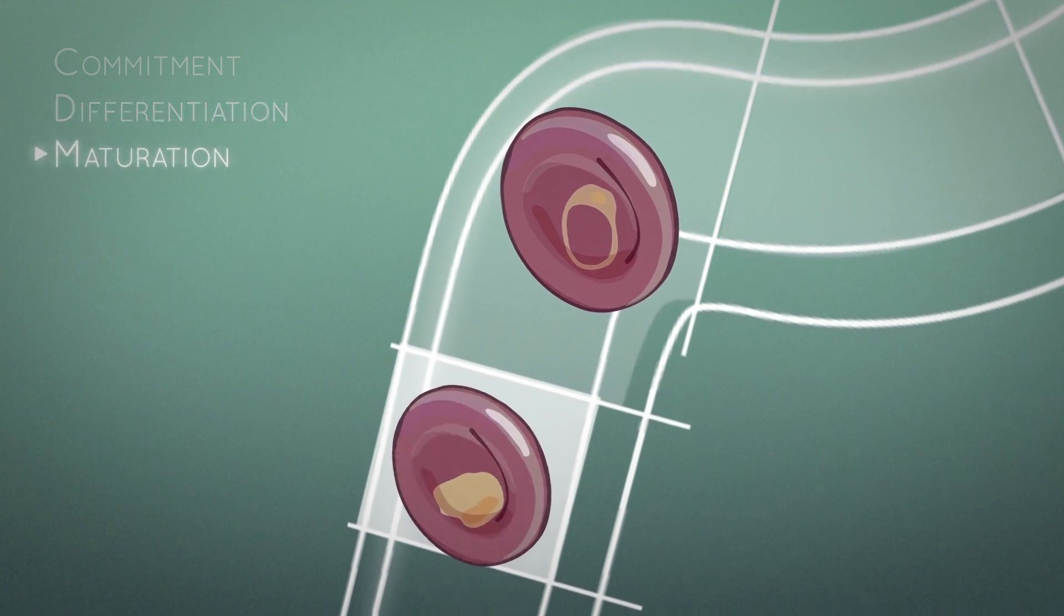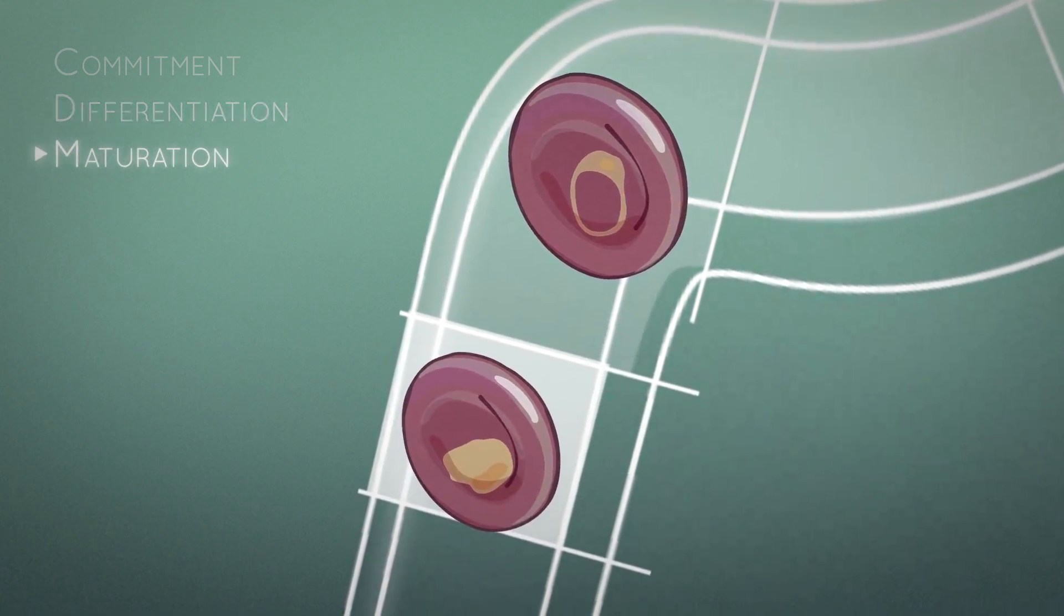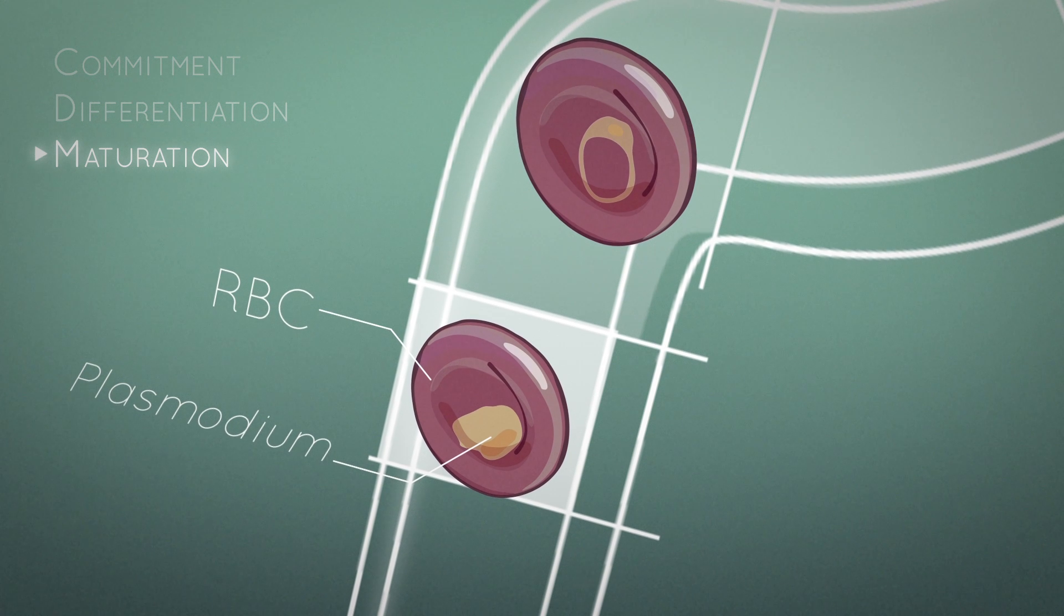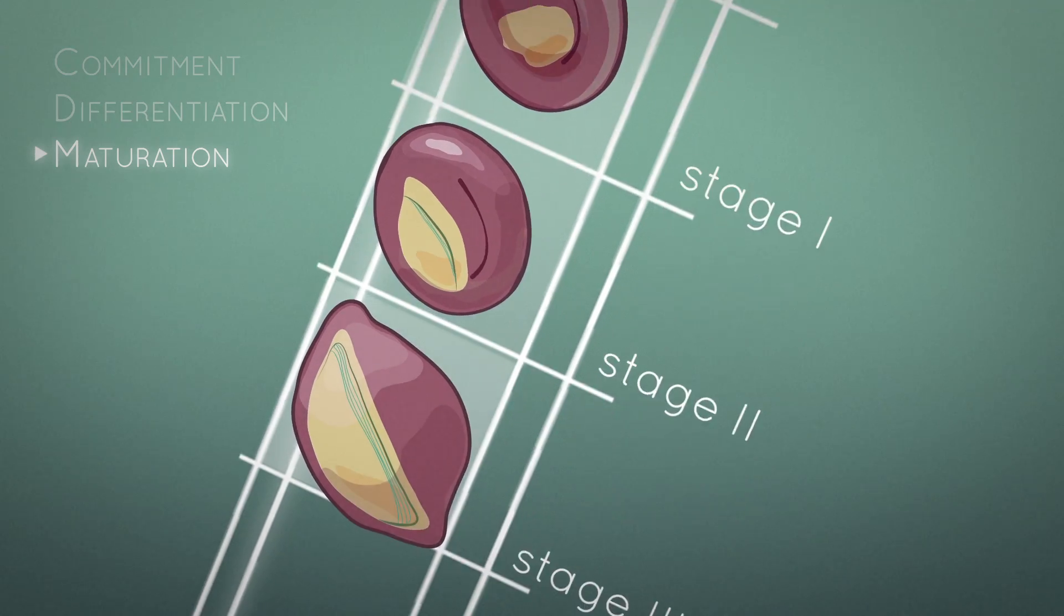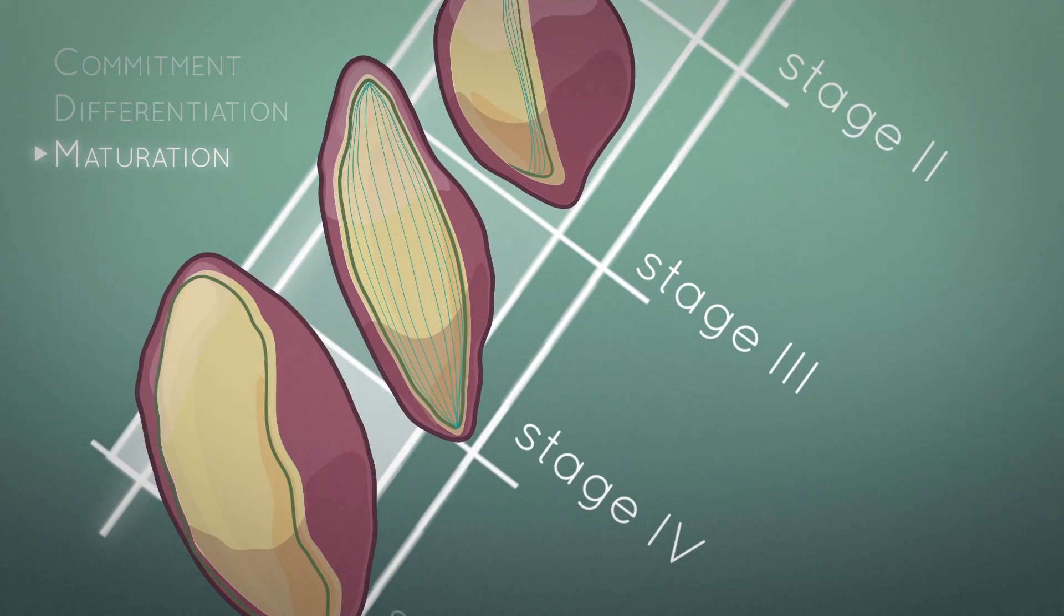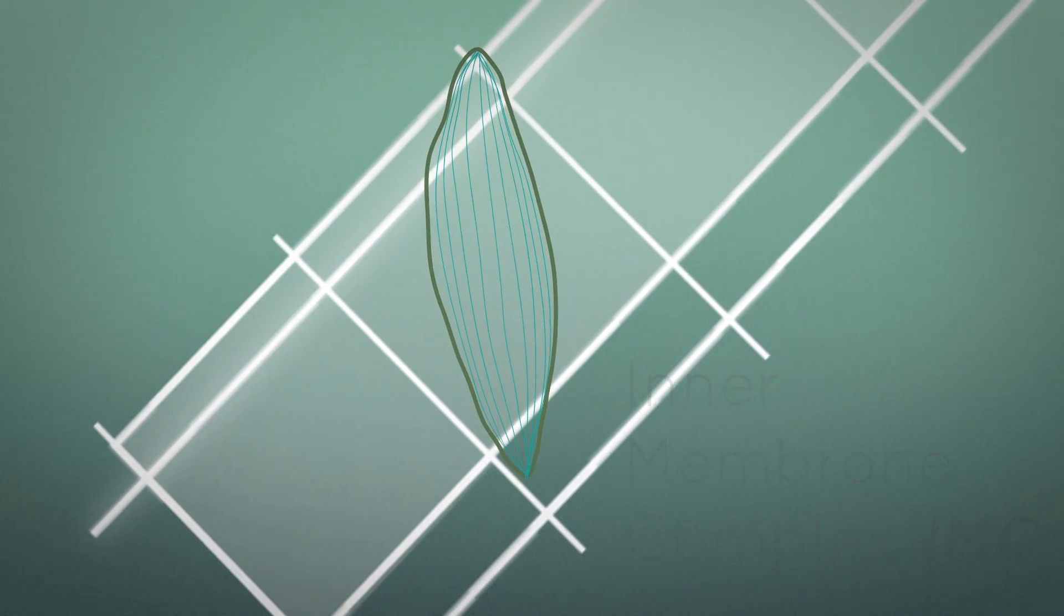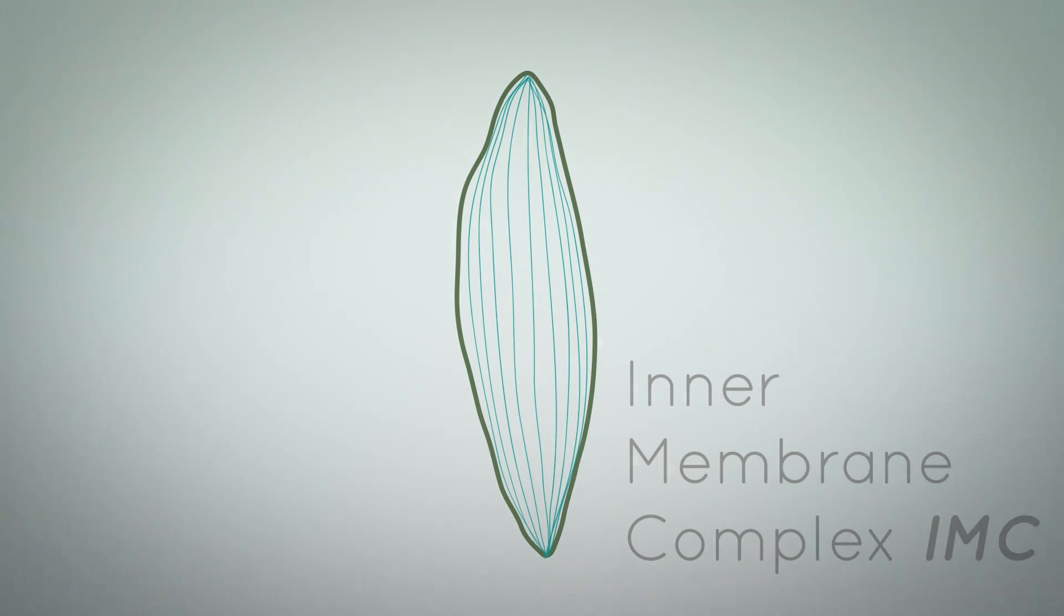Maturation, the final phase of gametocytogenesis, is initiated, and the gametoring enters the cellular differentiation process, divided into five developmental and morphologically discrete stages. The inner membrane complex, IMC, which is supported by the microtubule network, is involved in this process.